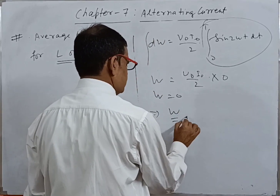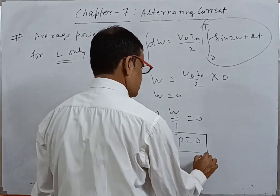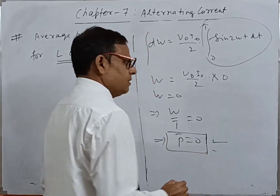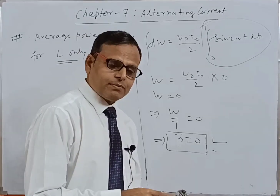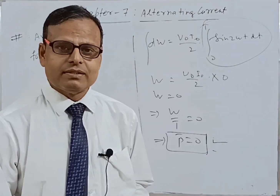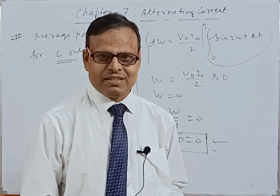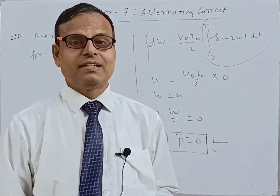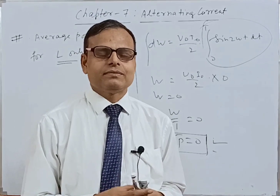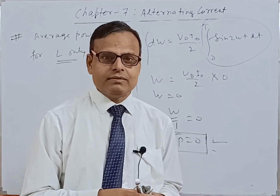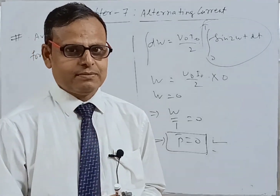Average power containing C only is 0. We conclude that the average power in L-only and C-only circuits are both 0. In the next class, in the next video, I will explain and derive the average power in the LCR series circuit.